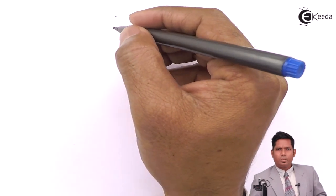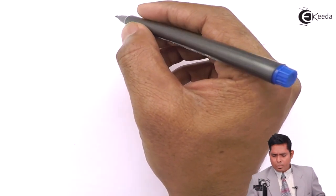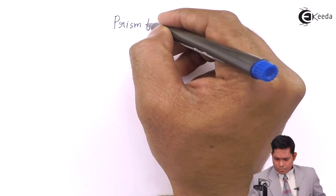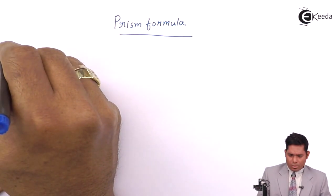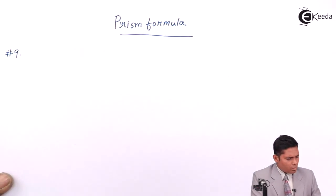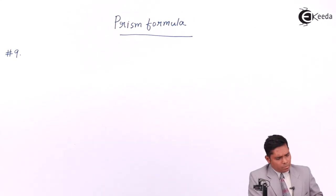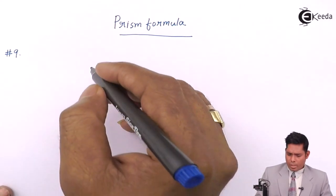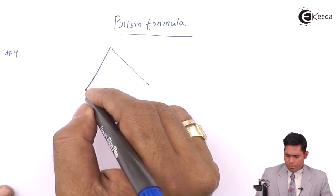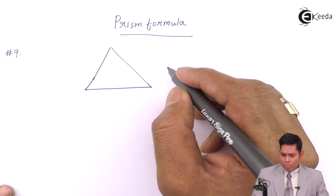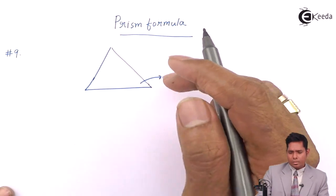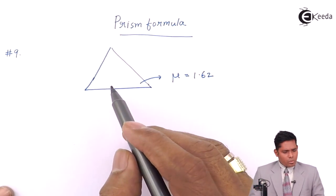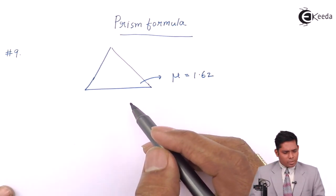Today we will take questions on the prism formula. Question number 9 says: find the angle of minimum deviation of a ray of light passing through an equilateral prism of refractive index 1.62. The refractive index of the glass of which the prism is made is given, and we have to find the angle of minimum deviation — nothing else is given.